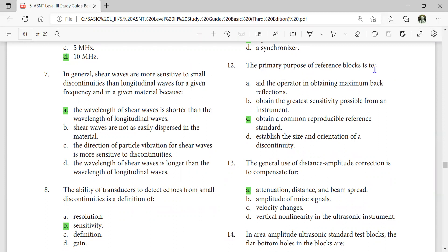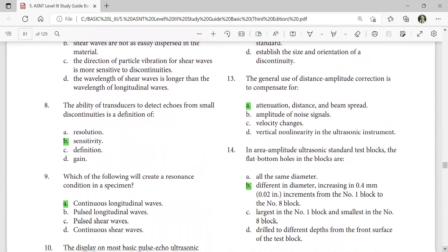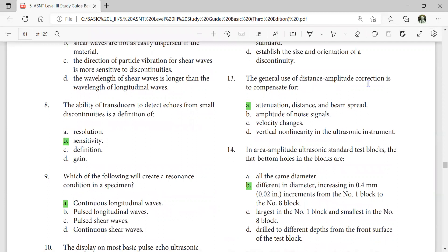The primary purpose of reference blocks is to obtain a common reproducible reference standard. The general use of distance amplitude correction is to compensate for attenuation, distance, and beam spread.